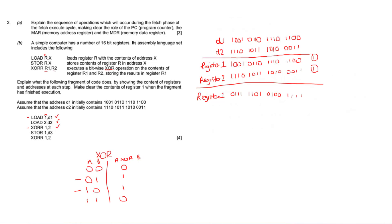Next is STORE 1 d3. The STORE r, x command stores the contents of register r — register 1 in our case — in address x, which is d3. So I create a new register called d3 and copy the contents of register 1 across. This is straightforward and gets you 1 mark — a fantastic number of marks for this kind of question.